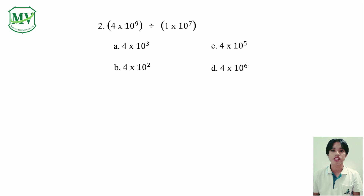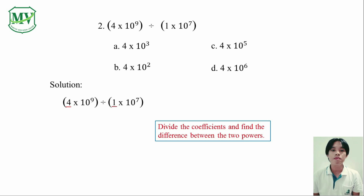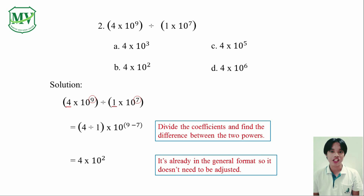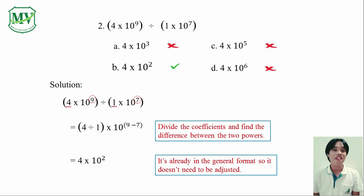The answer to this problem is very easy to figure out. I know you can already tell the correct letter even without doing the solution. However, for the sake of proving your answer, we still have to do the solution — simply divide the coefficients and subtract 7 from 9. Then simplify. It's already in the general format and we don't need to adjust it. So, 4 times 10 raised to the power of 2 is our final answer. And that's letter B.